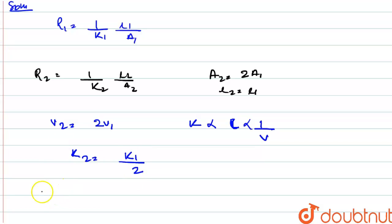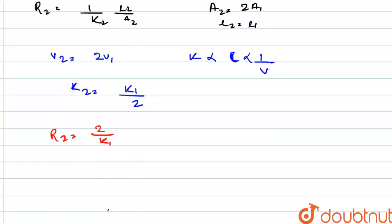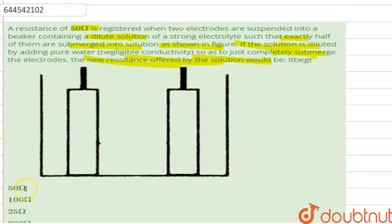So from this we can write R2 in terms of R1. R2 is equal to 2 upon K1, L2 is equal to L1, and A2 is equal to 2 of A1. So this 2 gets cancelled out and from here R2 is equal to R1. So final resistance would be the same as initial resistance. So R2 is equal to 50 ohm since R1 was 50 ohm. So option A is the correct option.